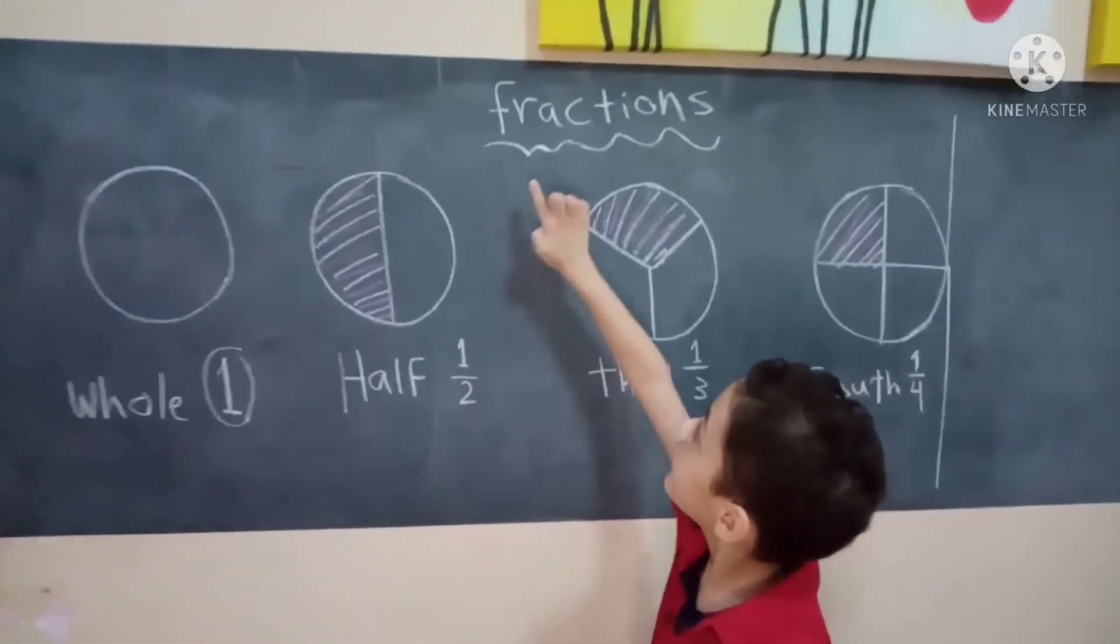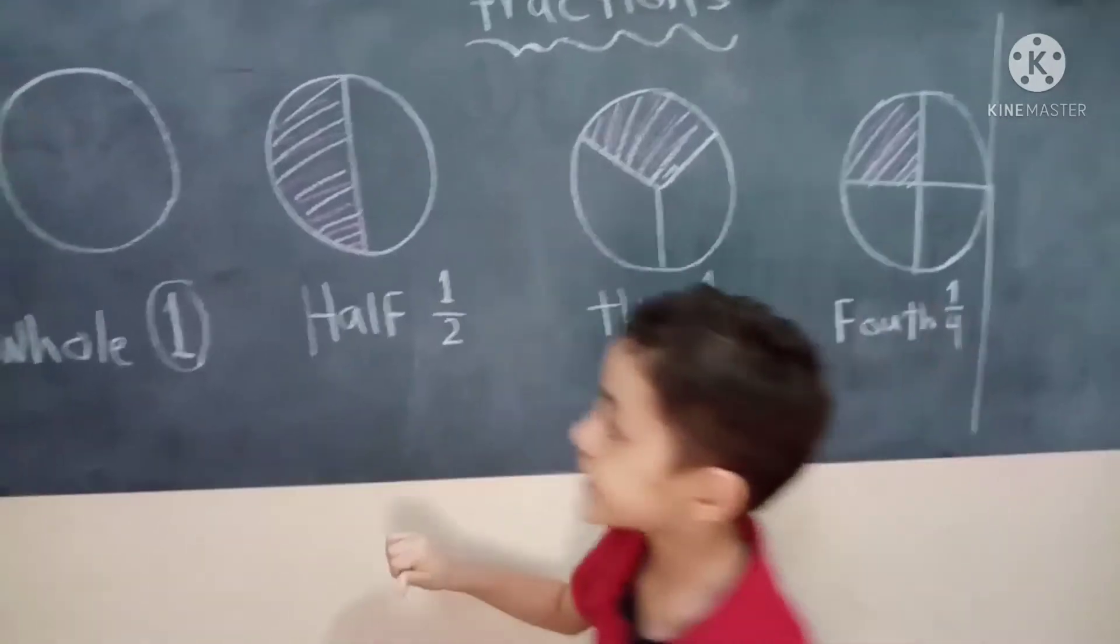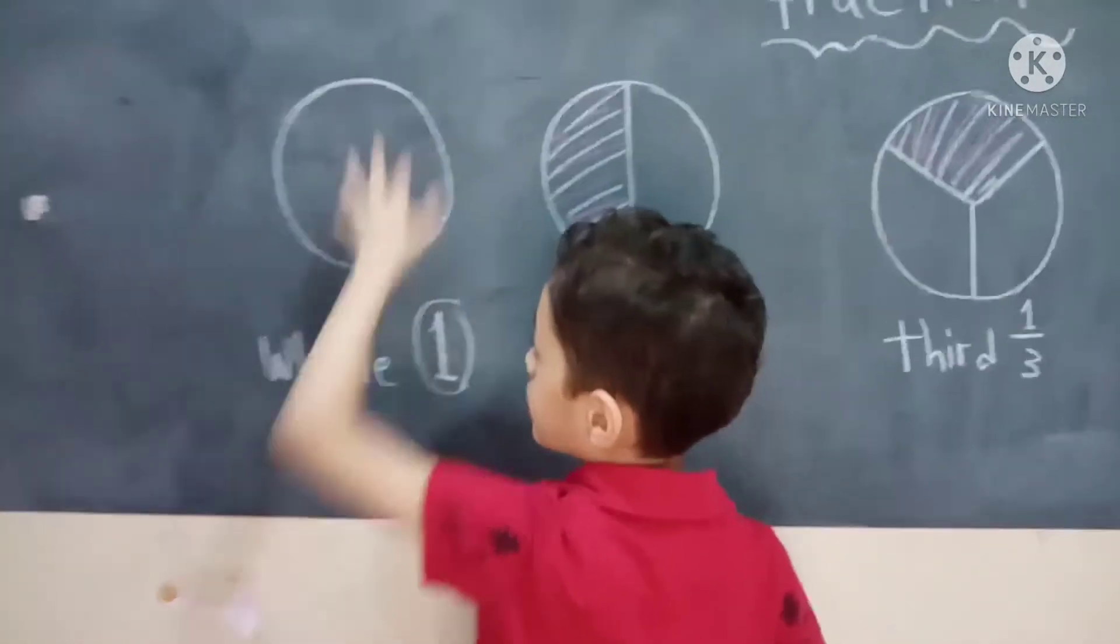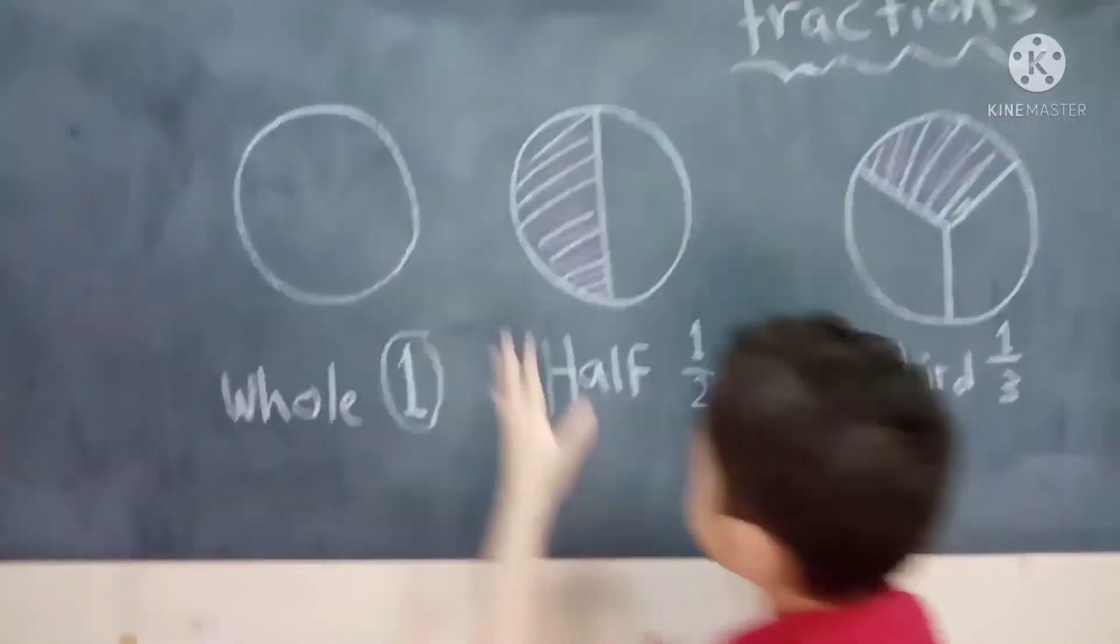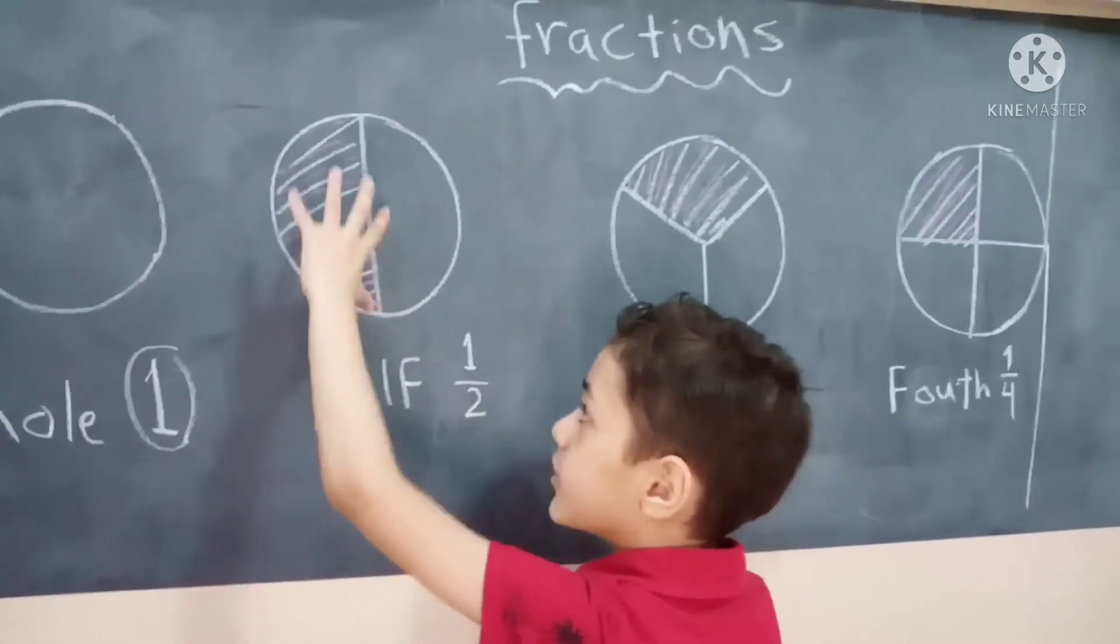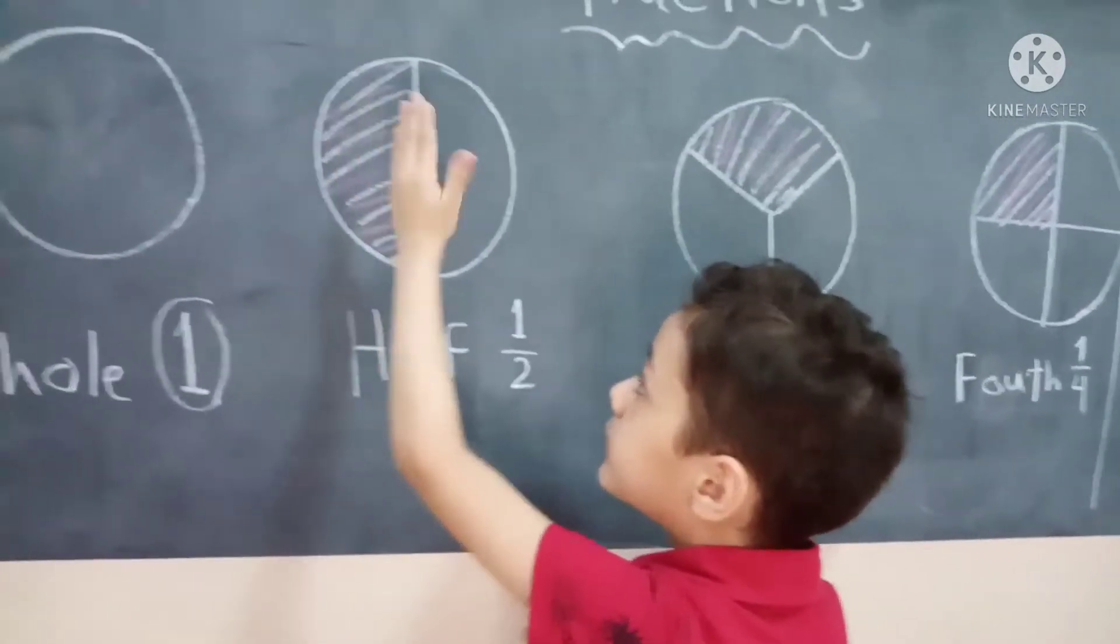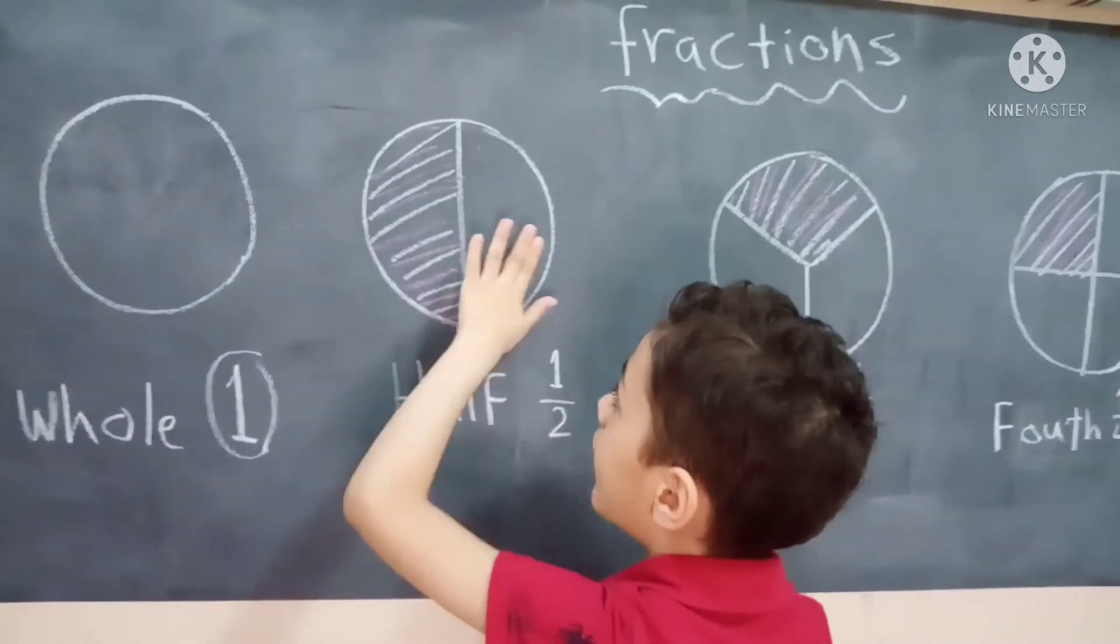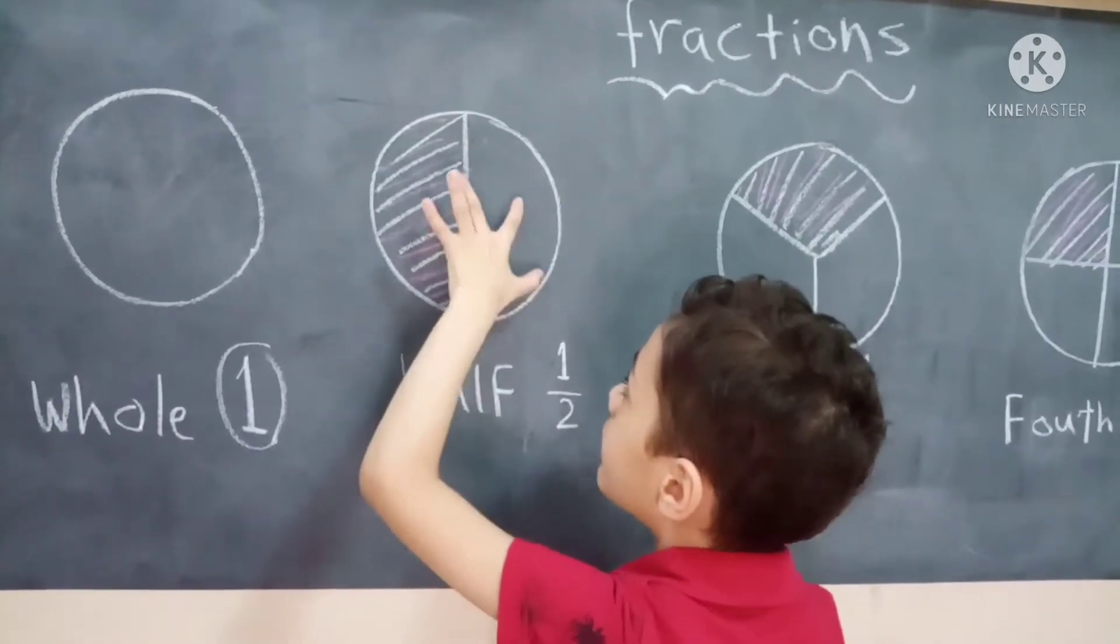So this is called fraction. This is one whole, nothing in there because it's so big. And this is called half, one half. Because that means the colored part is one and they have to be all. So one half. Half means two.